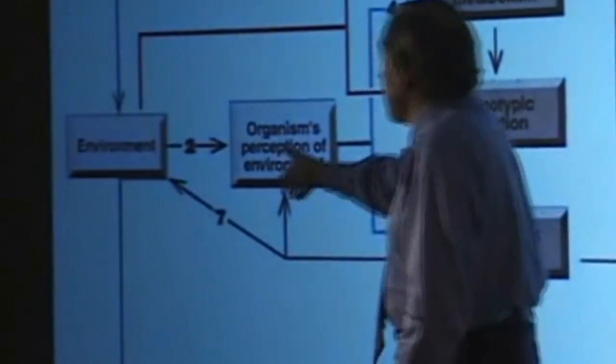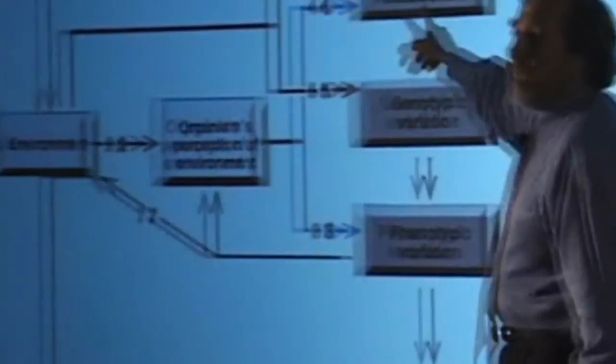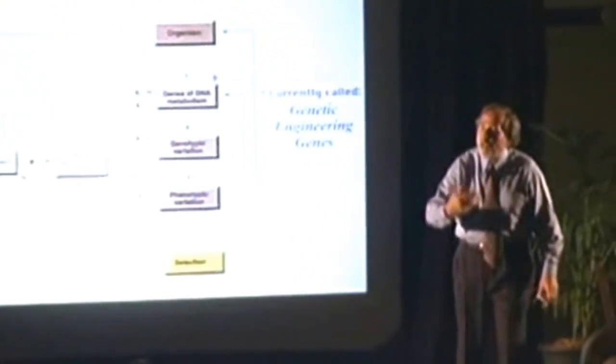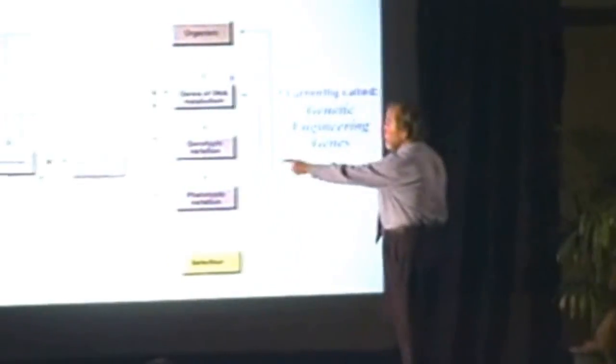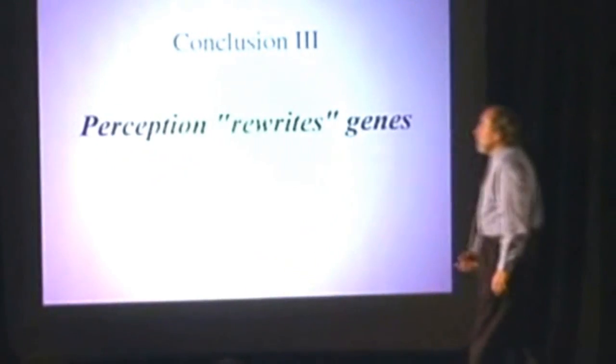But nonetheless, what does perception do? Follow the blue arrow. It activates genetic engineering genes. Your own beliefs are selecting your genes. And if you don't have the right genes to handle the stress that you're in, your belief will rewrite your genes in an effort to do so. So all of a sudden it says there's a lot of control over your life, but it's mediated by the perception of the environment. That's what's controlling the whole thing.